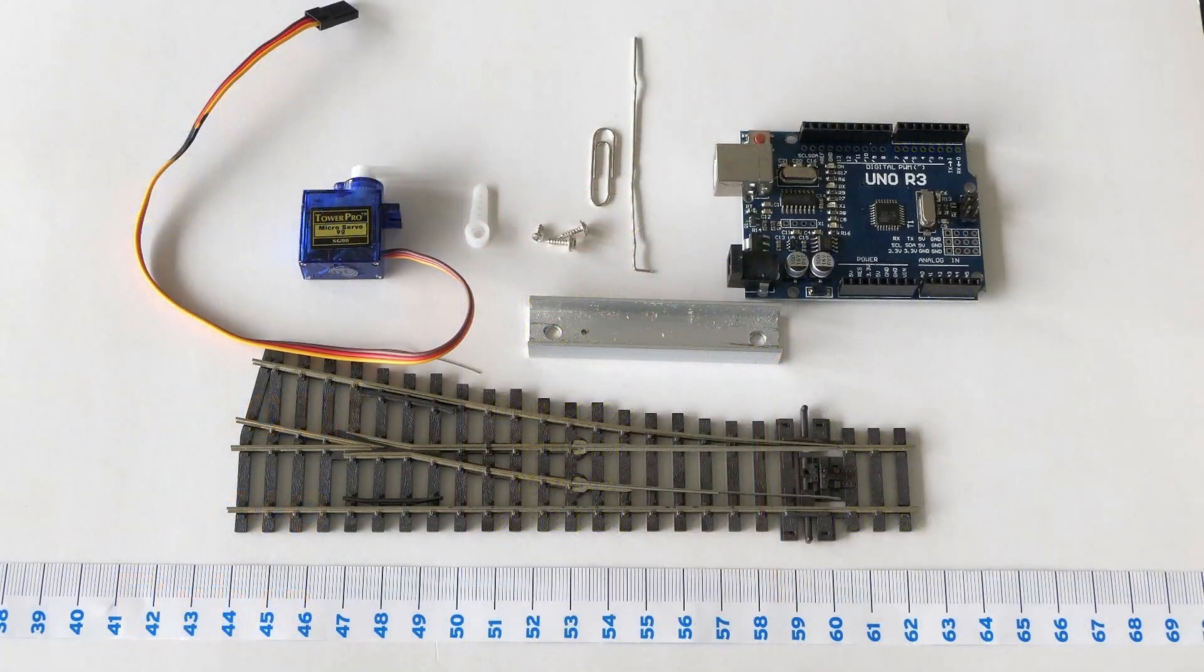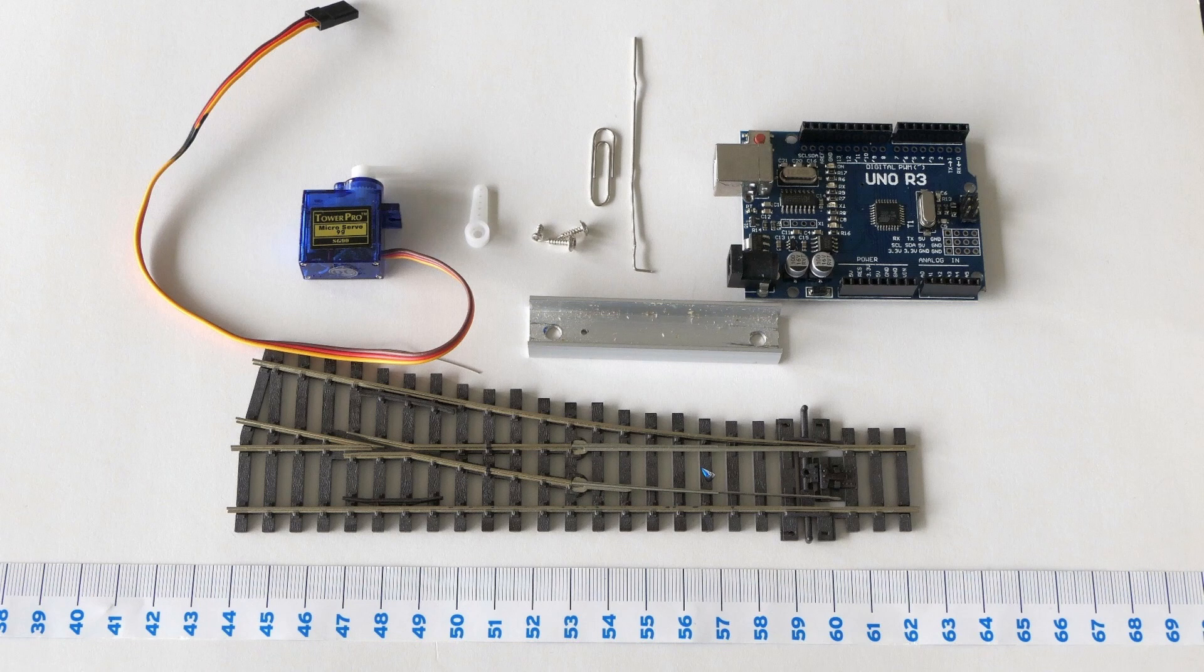These are the parts involved. In our case the turnouts that we use are PECO, the whole layout is PECO track. This is a Tower Pro servo. The arm comes with it. There's even a choice of three. We use the single arm. These screws also come with the servo.